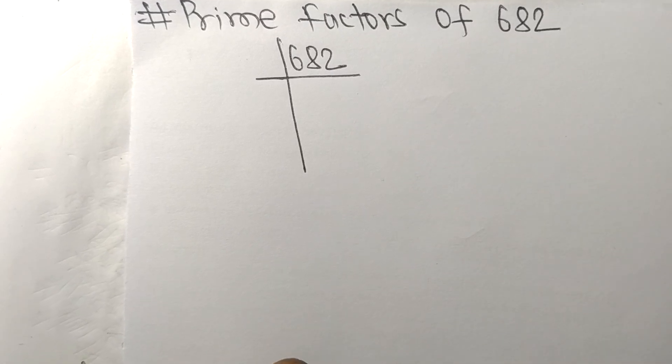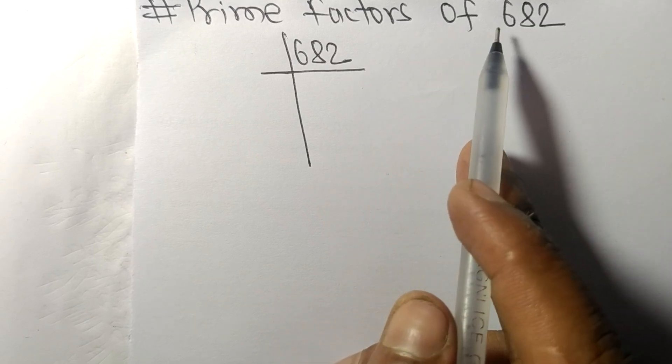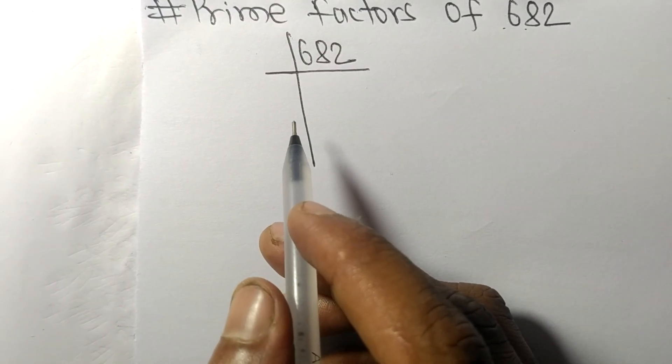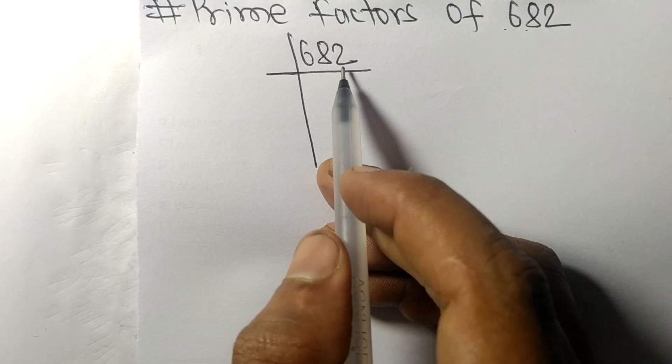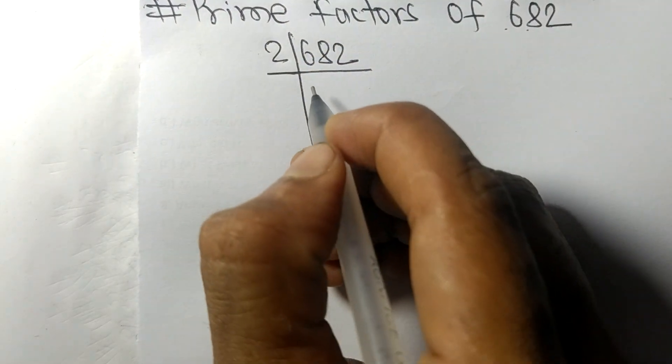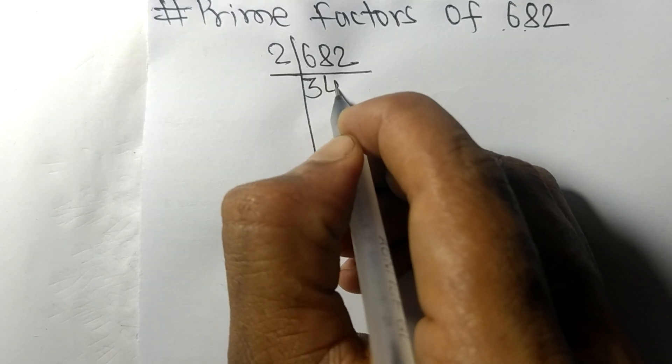So today in this video we shall learn to find the prime factors of 682. So at first it contains an even number, two. These whole numbers are divisible by two. Two times three equals six, two times four equals eight, two times one equals two.